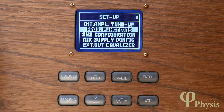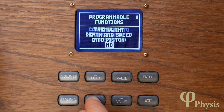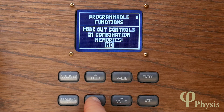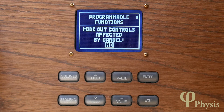In the Setup menu, the Programmable Functions option contains two further MIDI settings, found at the bottom of the list. The first determines whether to save the state of the MIDI output stops with organ combinations. The second determines whether the MIDI output stops are cancelled with the cancel piston.